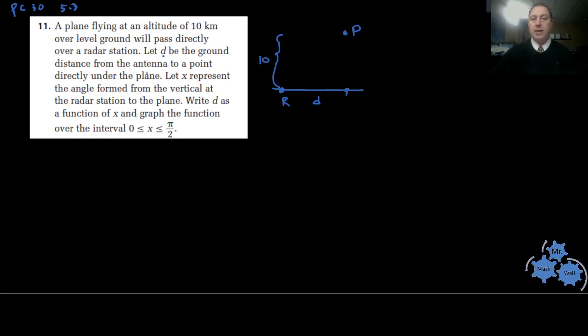Let x represent the angle formed from the vertical at the radar station to the plane. Here is the vertical at the radar station, and from the vertical to the plane, let x represent the angle formed. So this is x right here.